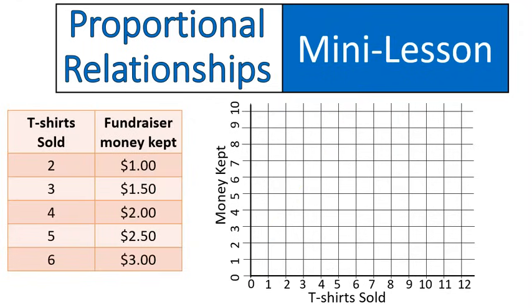Let's take a look at this one. In this one, it's t-shirts sold to the fundraiser money kept. If you sell two t-shirts, you raise $1. If you sell three t-shirts, you raise $1.50. Four t-shirts, you raise $2. Five is $2.50, and six is $3. I guess this fundraiser is not very effective.